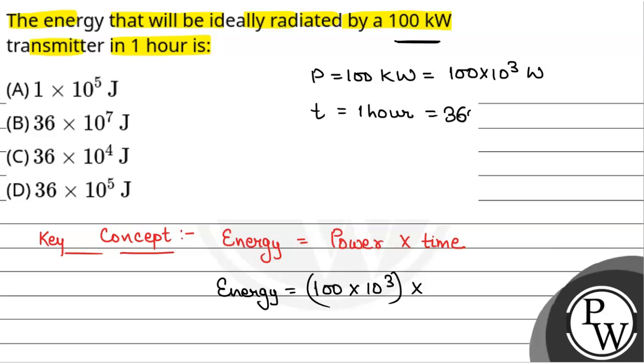So, this will be 3600 seconds, as we are taking energy in all the units in SI unit. So, this will be multiplied by 3600. So, this will be 36 into 10 to the power of 7 joule.